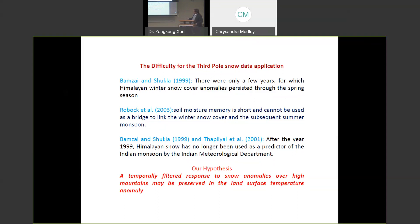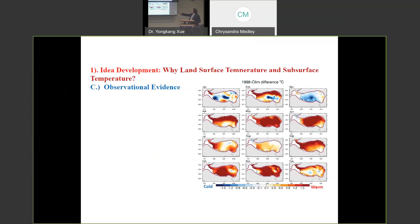And also, so far, although there were many studies using Himalaya snow, but most is sensitivity, use no snow with snow, not for the subseasonal prediction. But the data analysis certainly is supported the relationship. So our hypothesis is a temperature filter response to snow anomaly over high mountain, maybe preserved in the land surface temperature anomaly. We feel the snow effects may be better preserved in the land.